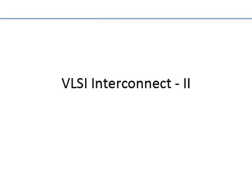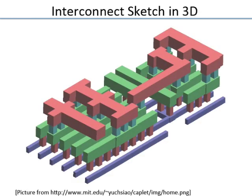Today we will discuss some aspects of wire and wiring and interconnect engineering in chips, and a 3D perspective of how the wiring looks in a chip where you have wires in different layers of metal. Modern chips can have up to 9 layers of metal and the lowest layer is called metal 1, then metal 2, metal 3, up to metal 9.